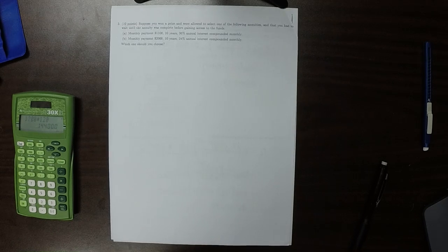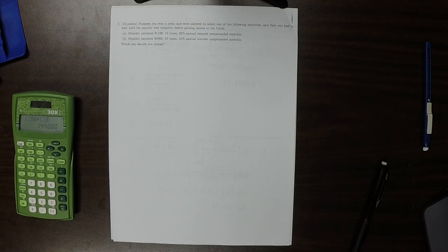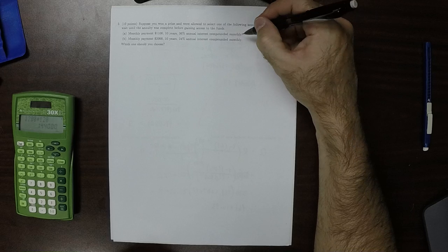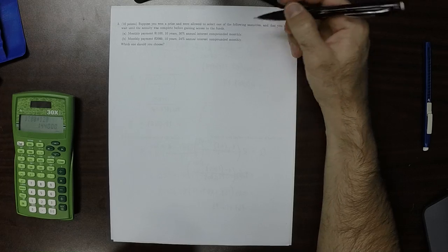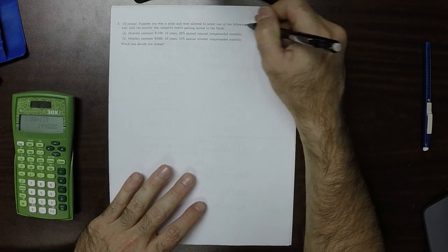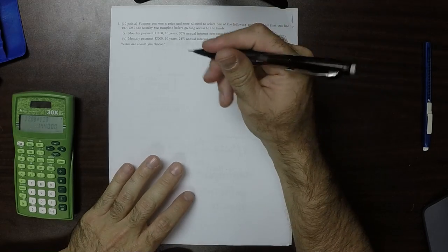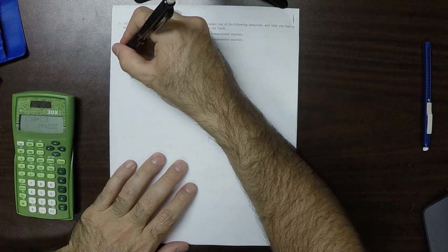Okay, question three. Suppose you won a prize and that you had to wait. So what the question is asking, it's saying here's two different annuities, and they both mature in 10 years, and you can't have any of the money until they've matured. So in the end the question is, which annuity is worth more, annuity A or annuity B. So, and because we can only get it in the future, we want the future value. So the future value, so for part A, the future value will be.